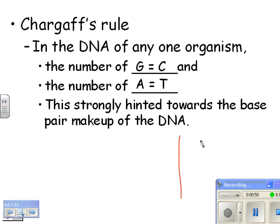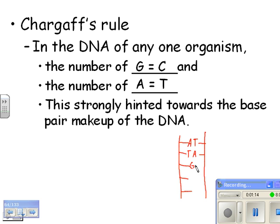He didn't know the structure of DNA, but we do today. What he was saying is that for any organism — maybe an earthworm — however many A's they have, there are that many T's. And so this hinted toward the idea that whenever you have an A, it pairs with a T; whenever you have a T, it pairs with an A; if you have a G, it pairs with a C; and a C pairs with a G. So this is the base pair makeup that we're talking about.